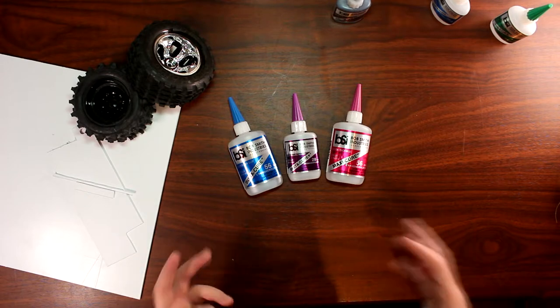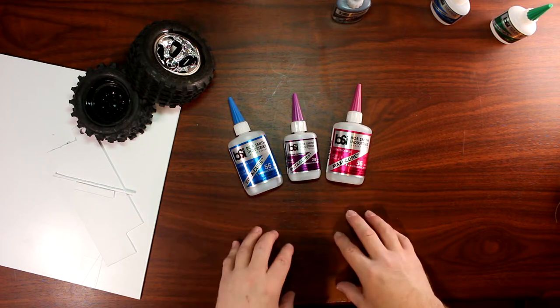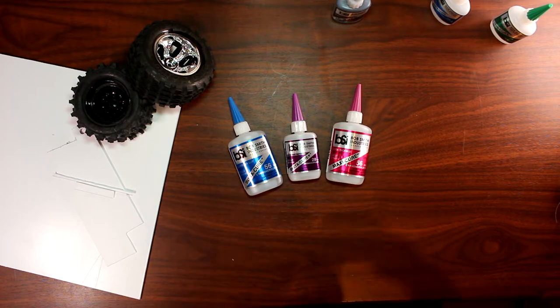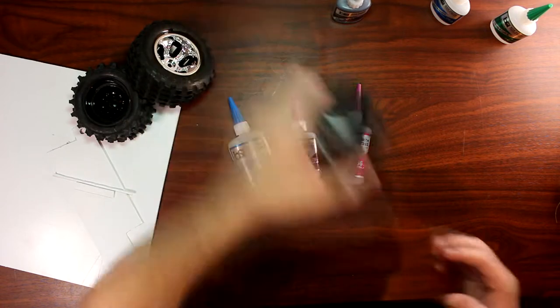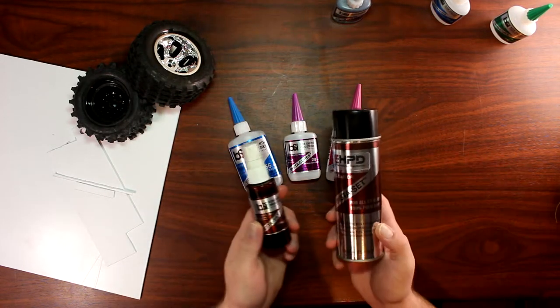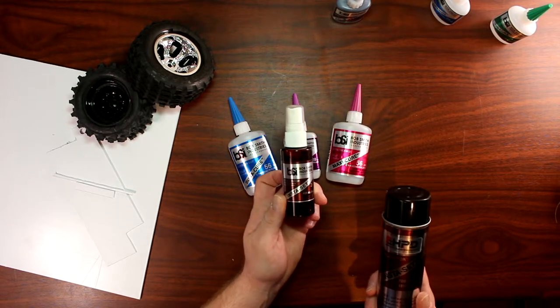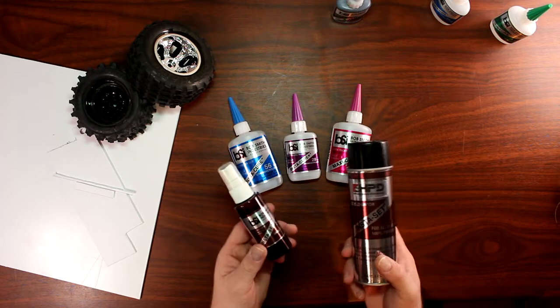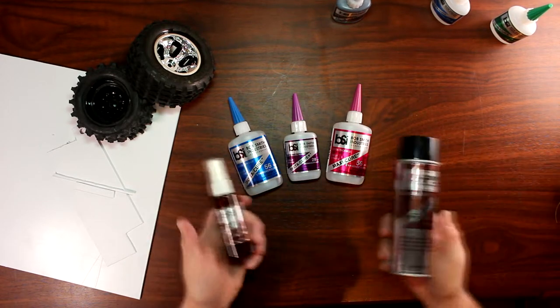Now the other thing too, the drying times are a little bit different for every CA glue, depending on thickness of it. There's products out there to help you make them dry faster. They're called CA accelerators. You have a spray and a pump action. Both will do the same job. It's just the way to apply it that's a little bit different.